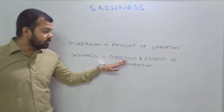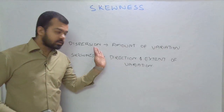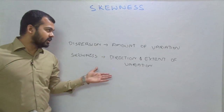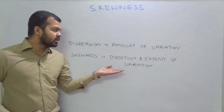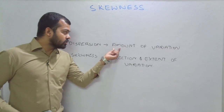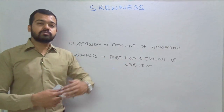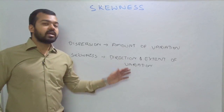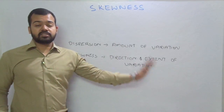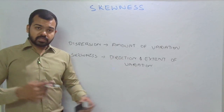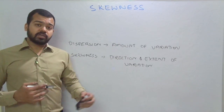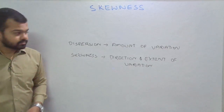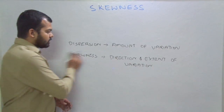This is a limitation of dispersion that skewness can fulfill. The amount of variation is covered by dispersion, but the direction and extent — meaning how symmetrical or how asymmetrical your series is — is covered by skewness. Now we consider the test of skewness, which tells us how we can know whether a series is skewed or not.